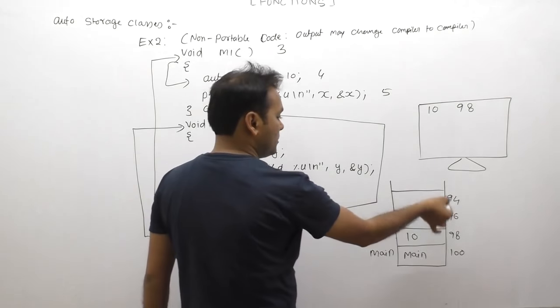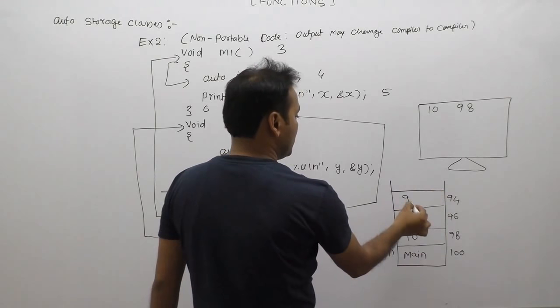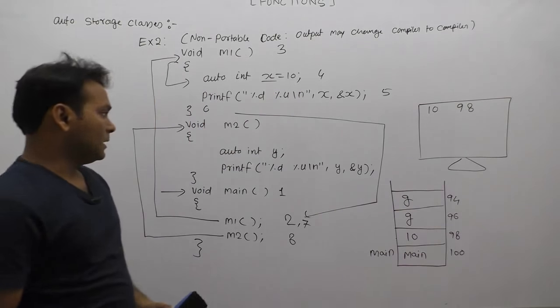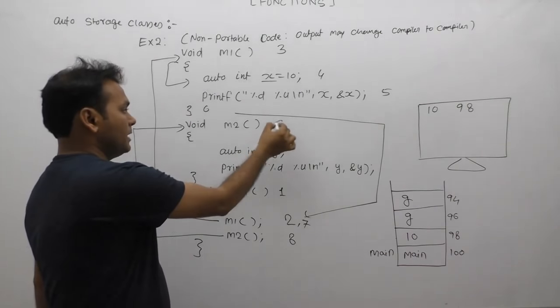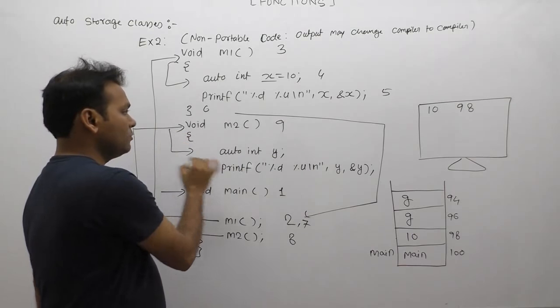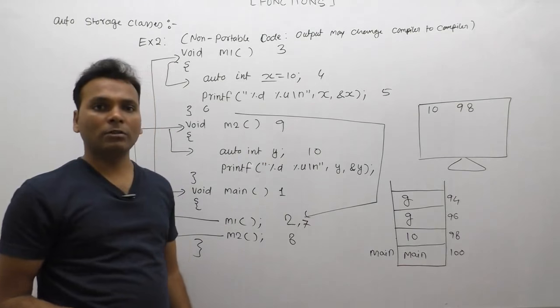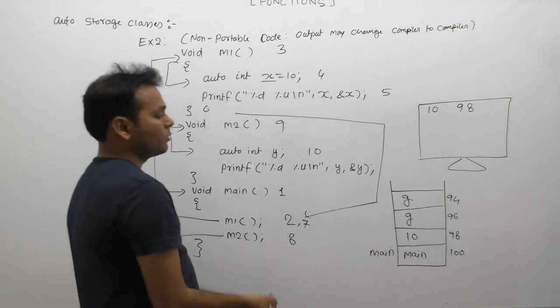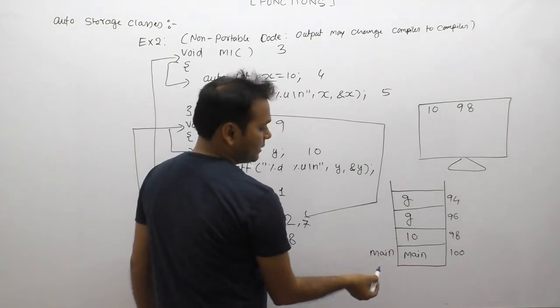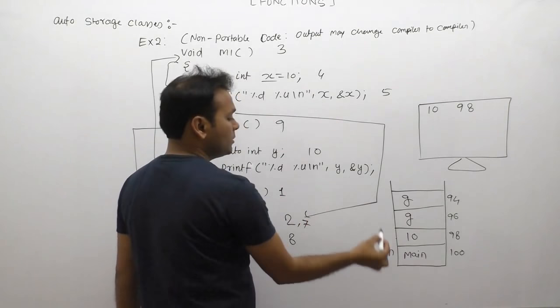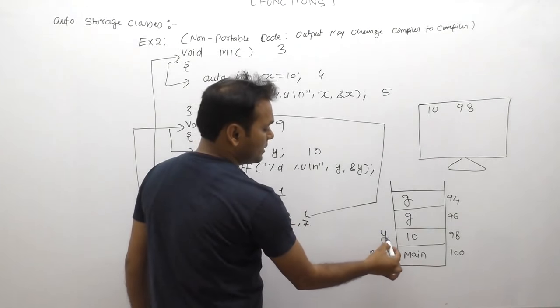That place is deallocated. Next one, m2. When execution control goes to m2 function's body part, allocation for auto variable of m2 happens. m2 has auto variable defined as y. The location which was previously assigned for x, the same location may be assigned for y.